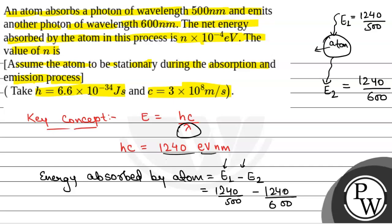So this will be equal to 1240 by 500, that is approximately equal to 2.5, and 1240 by 600, that is approximately equal to 2.06, and this is 2.48. So this will be equal to energy absorbed. So energy absorbed will be equal to 0.42.